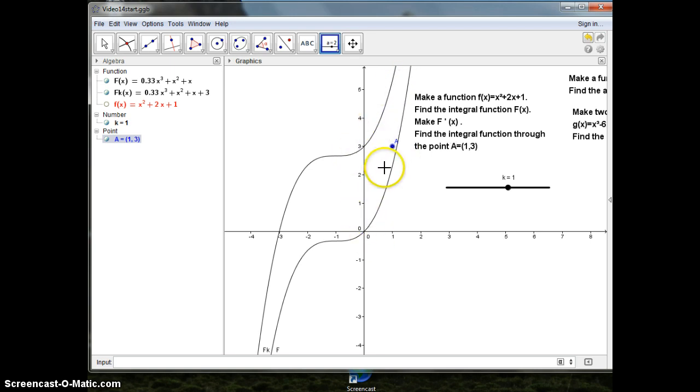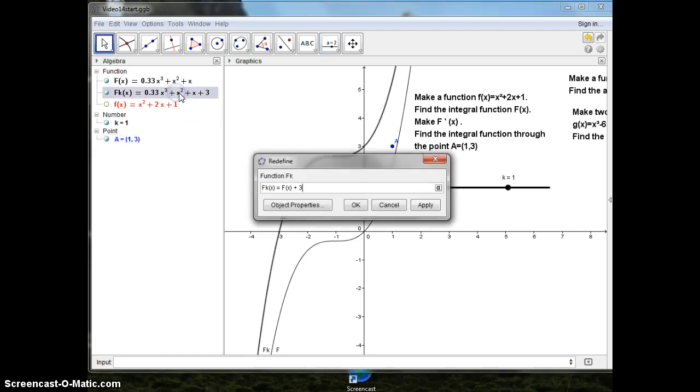I have two here. One is too far high and this is too low. So, I'll redo that one. F k of x, I'll say it's plus the k I've got.